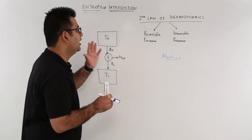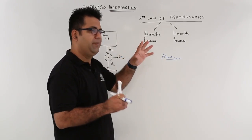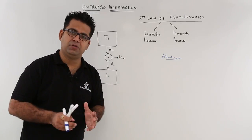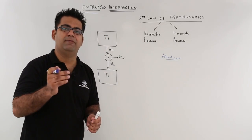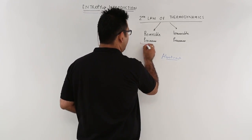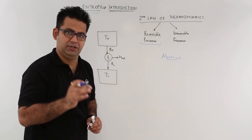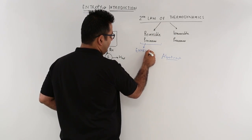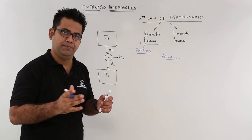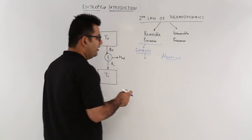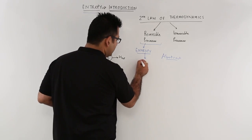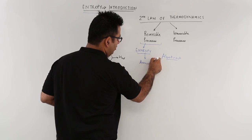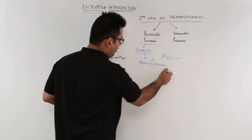The second law basically deals with two kinds of processes: the first is a reversible process and the second is an irreversible process. Entropy is basically linked with the reversible process, so we study entropy in context with reversible processes only. In a very simplistic manner, entropy is the amount of disorder in a system.